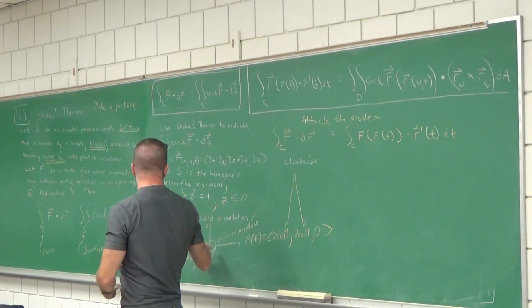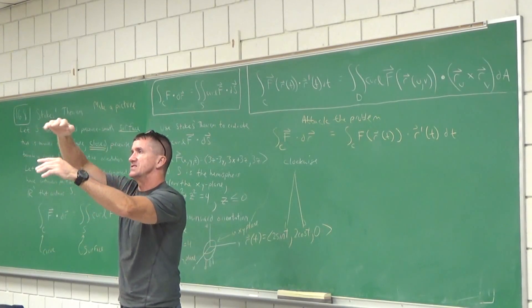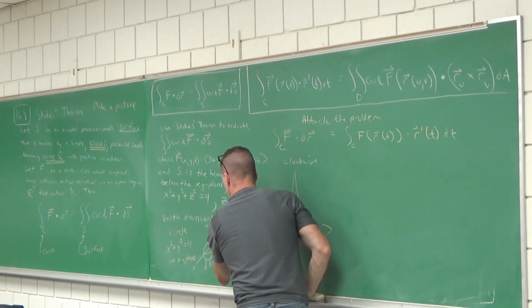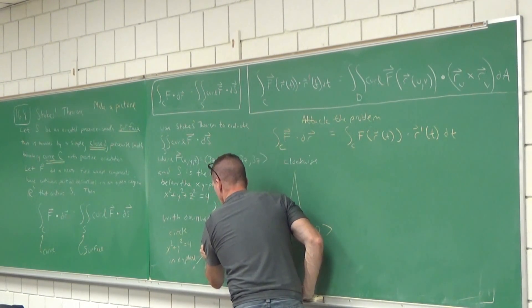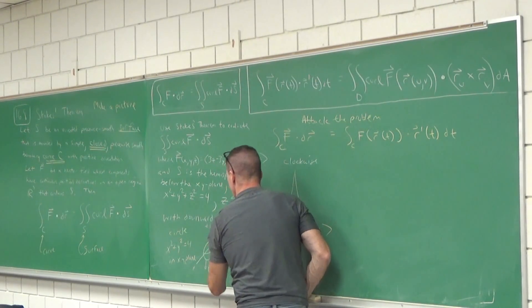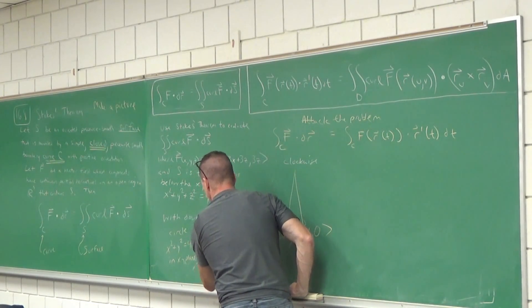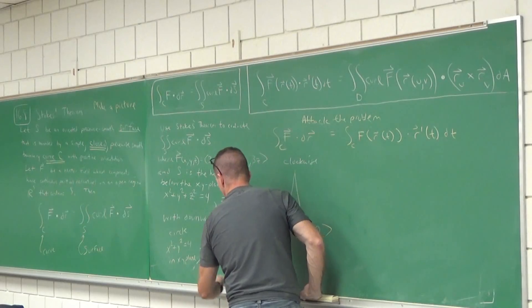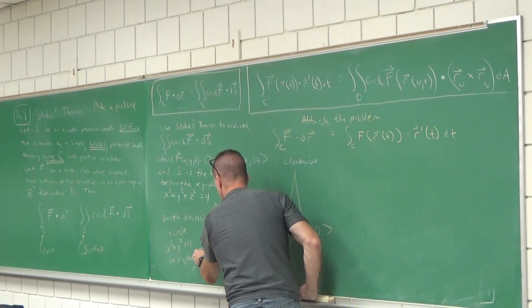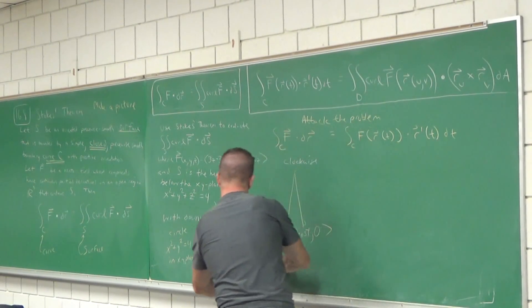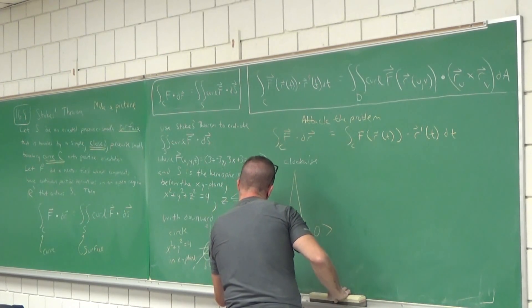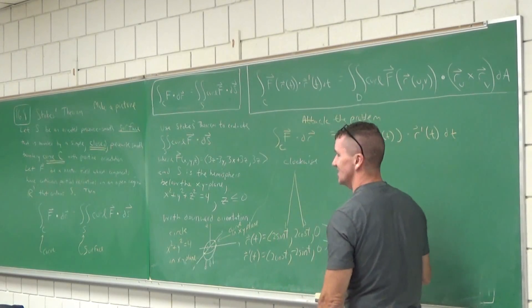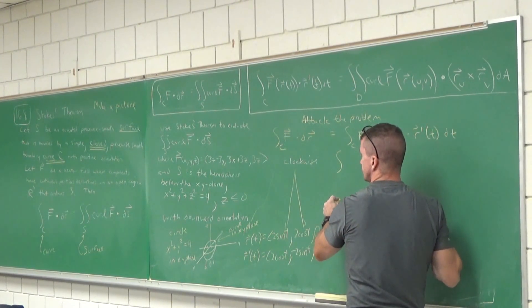The curve is sitting in the XY plane, so Z is just equal to zero — I'll make that component zero. If it were a parabola going up to Z = 9 with the boundary curve sitting at Z = 9, I'd make that a nine. But here Z = 0. So R(T) = ⟨2 sin T, 2 cos T, 0⟩. Our R′(T) is ⟨2 cos T, −2 sin T, 0⟩. What makes it go one whole loop? Zero to 2π.